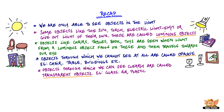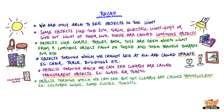Objects through which we can see clearly are called transparent objects. For example, glass, air, plastic, etc. Objects through which we can see but not clearly are called translucent objects.